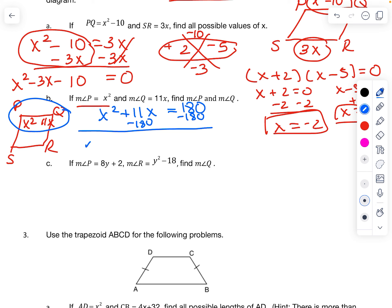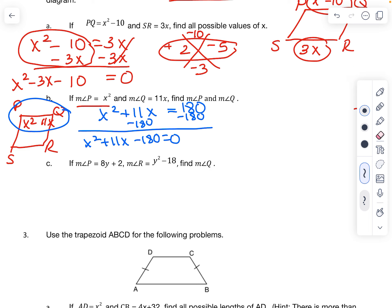So I have x squared plus 11x minus 180 equals 0. So we're going to do the same type of factoring that we did above. So I need two numbers that multiply to negative 180 but add up to positive 11. Take a while to find those numbers. But the only numbers that work are going to be 20 and negative 9.